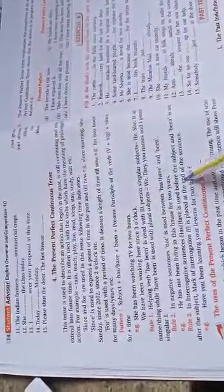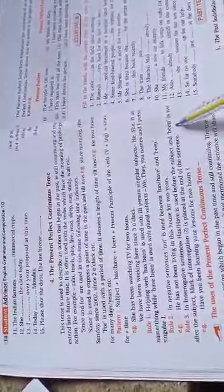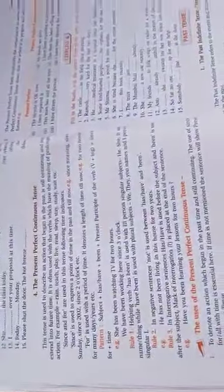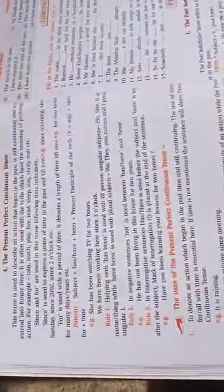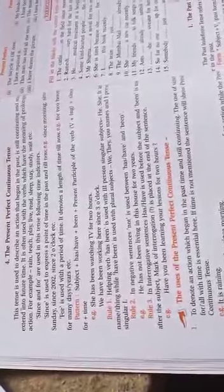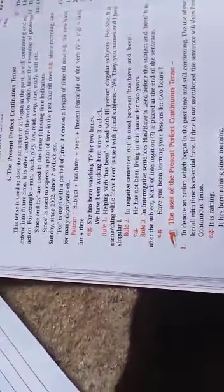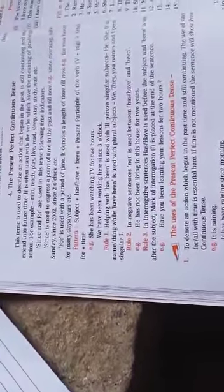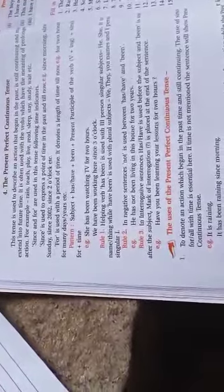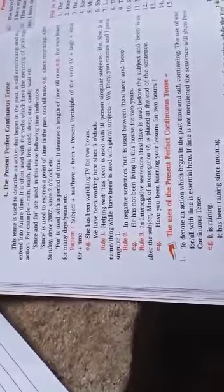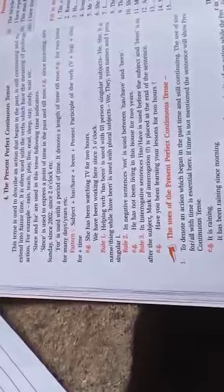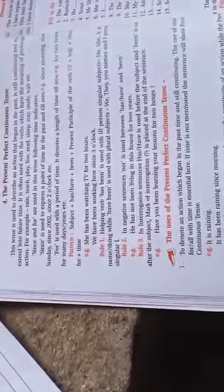The mark of interrogation is placed at the end of the sentence. In present perfect continuous tense, 'has been' or 'have been' is used as a helping verb, and since or for plus time is used.